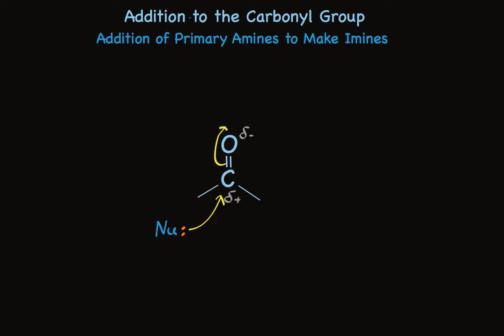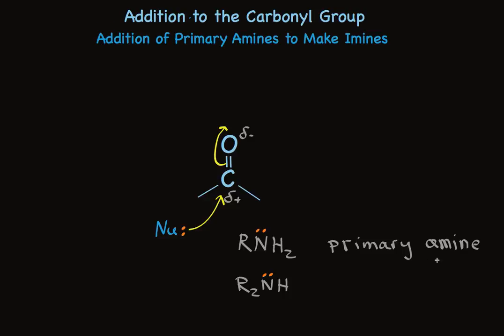Primary and secondary amines are among the nucleophiles that add most readily to the carbonyl group. In each case, the nitrogen has a lone pair of electrons that are unshared, which can be used to form a bond with the carbonyl carbon. When there is one alkyl group attached to the nitrogen, we call it a primary amine. When there are two alkyl groups attached, we call it a secondary amine.